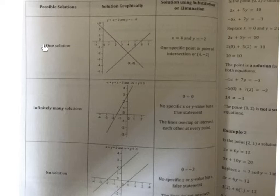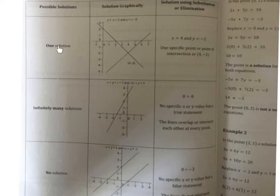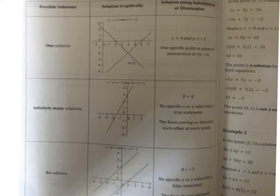To get one solution, when you're solving by graphing, means that those two lines cross or intersect at one point. One solution means the lines intersect at one point. When you figure out there's one solution, it's your job to find the ordered pair of that one point where the two lines intersect, and that is the one solution. The two lines intersect, it gives one solution, and we'll give the ordered pair that is the solution.